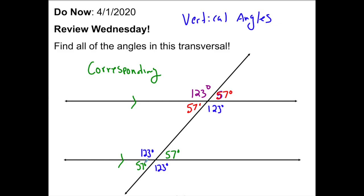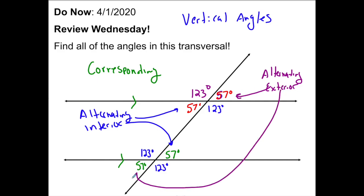So we've got alternating interior, here's an example, 57, and then we have alternating exterior. So this 57 and this 57, alright.